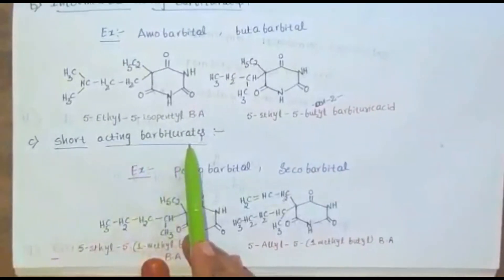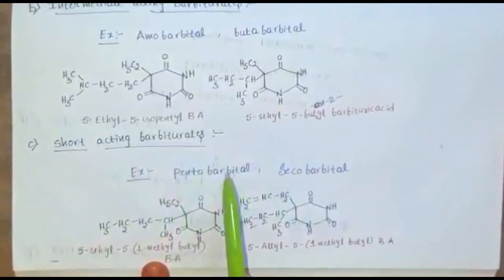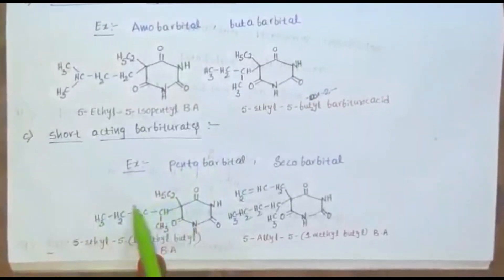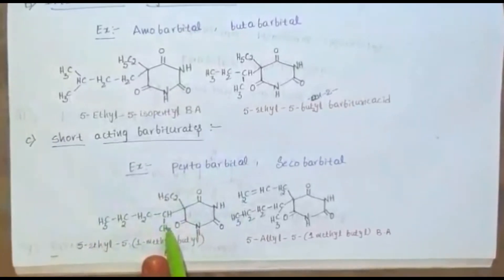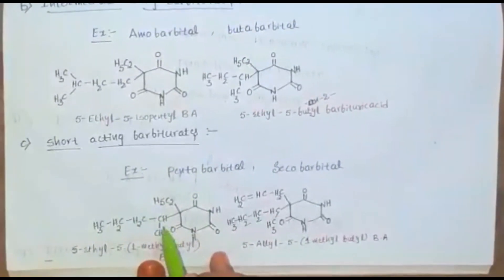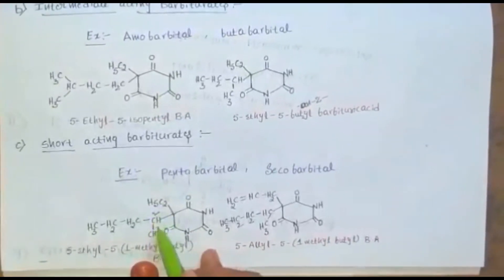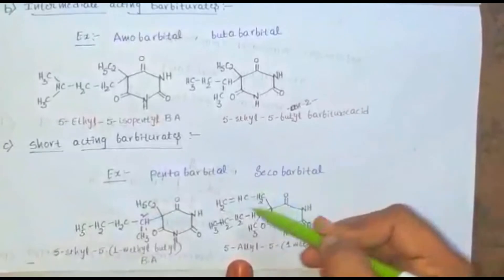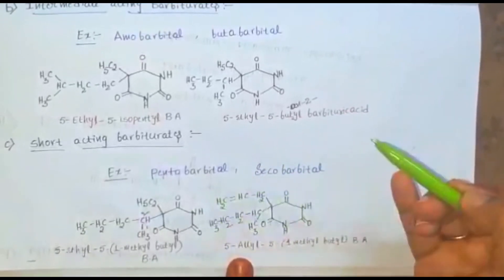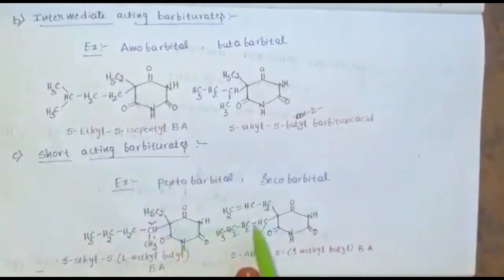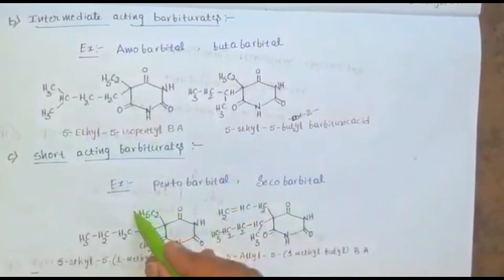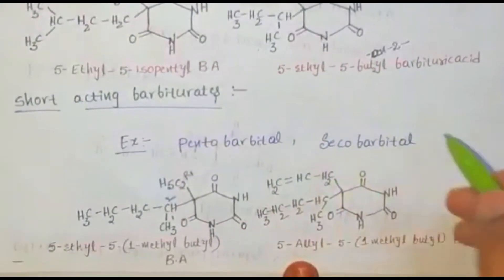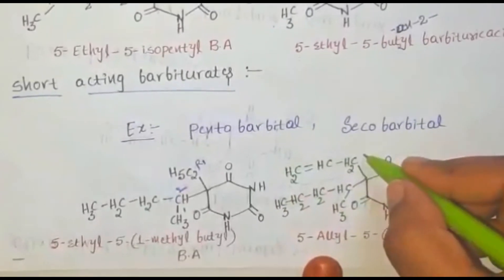Short-acting barbiturates: examples are pentobarbital and secobarbital. In pentobarbital, a pentyl side chain is substituted at the fifth position, and this side chain is attached to the ring at the second position. In secobarbital, an allyl side chain is substituted at the fifth position. The difference between pentobarbital and secobarbital is that a C2H5 group is the R1 group in pentobarbital, while an allyl group is the R1 group in secobarbital; the R2 group — a pentane-2-yl side chain — is the same in both.